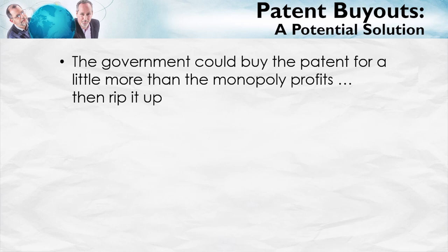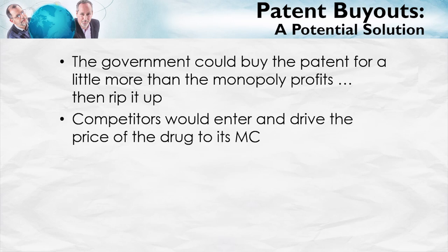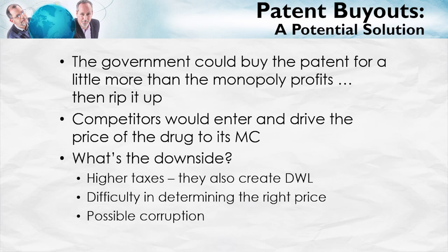Is there a better way of navigating this trade-off? Perhaps. Suppose the government bought up a pharmaceutical patent for its total monopoly profits and then ripped the patent up. Competitors would enter and drive the price of the drug down to marginal cost — static efficiency. At the same time, since the government was paying firms their monopoly profits, we would still have lots of incentive to do R&D — dynamic efficiency. Thus we could have the best of all worlds, though higher taxes to pay for the patent also have their own deadweight loss, and it might be difficult to determine exactly how much a patent is worth. There could also be possible corruption. Nevertheless, this is an idea worth thinking about and perhaps worth experimenting with.